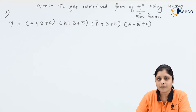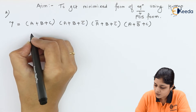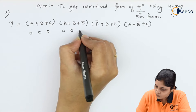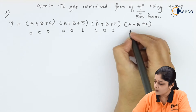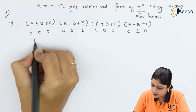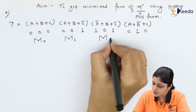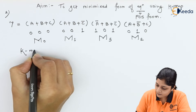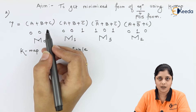First, collect the max terms. For bar terms write 1, for remaining terms write 0. We get: 000 → M0, 001 → M1, 101 → M5, and 010 → M2. Since A, B, and C are three variables, a three-variable K-map is required.